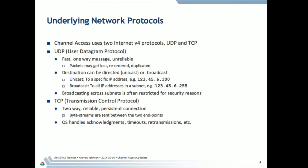TCP is a two-way, stream-like protocol — it's reliable. The underlying network software takes care of missing packets, duplicate packets, and reordering. It's a persistent connection, like a telephone: you dial it, make the connection, and it stays up until you put the phone down. UDP is more like sending a letter. TCP allows us to send a continuous stream of bytes in both directions, and the OS handles all the acknowledgment, timeouts, and retransmissions.